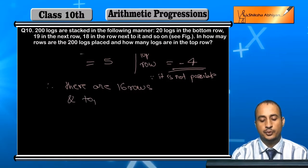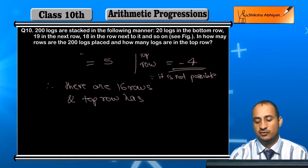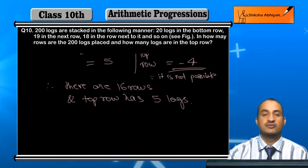Therefore there are 25 rows, and the top row has 5 locks. So the top row has 5 locks.